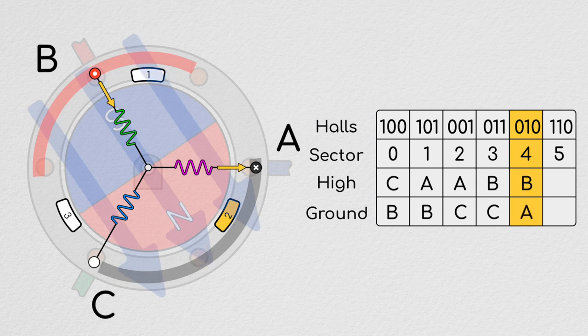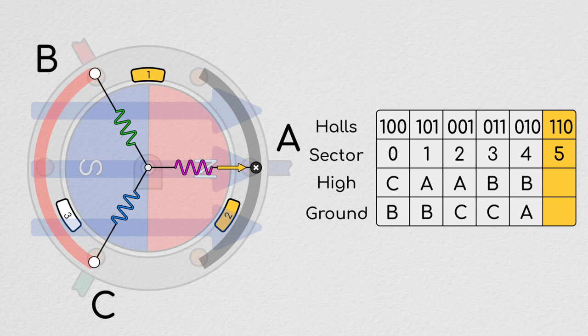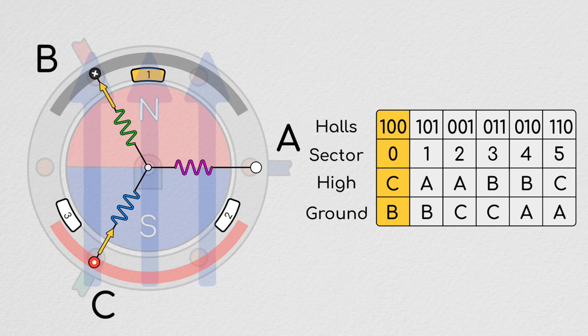Finally, in Sector 5, we will disconnect B from high and swap C in its place. We will then go back to Sector 0 and repeat this pattern as long as we want to rotate.